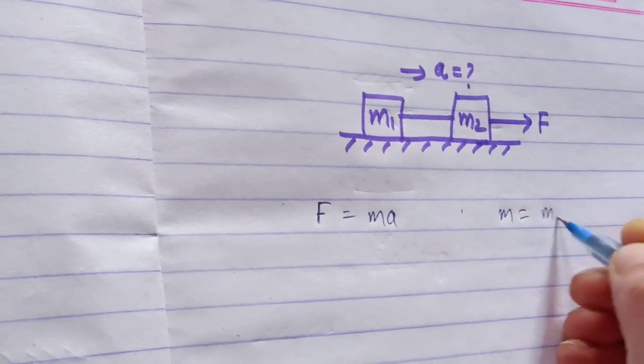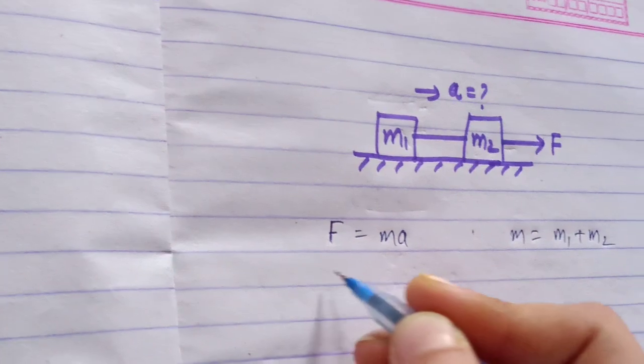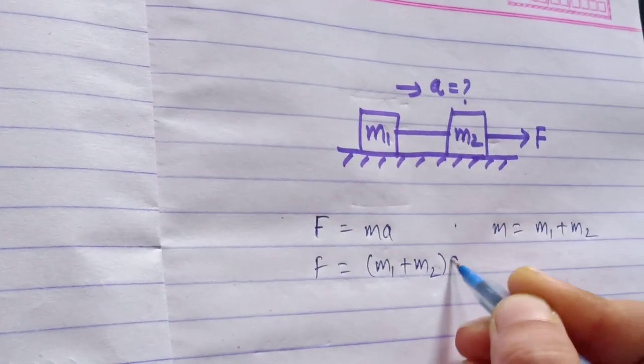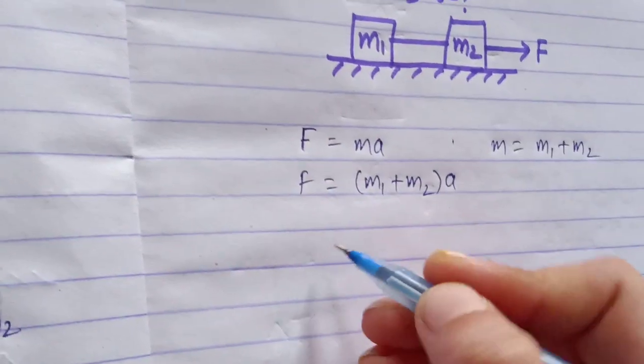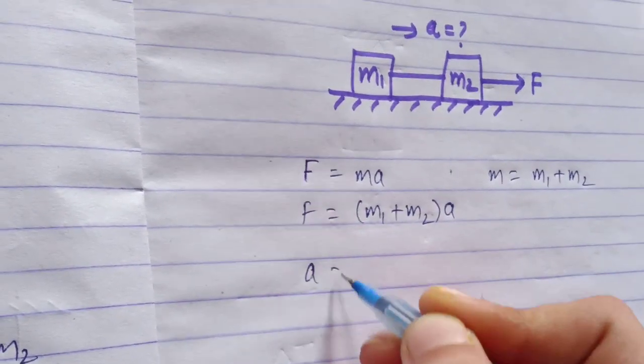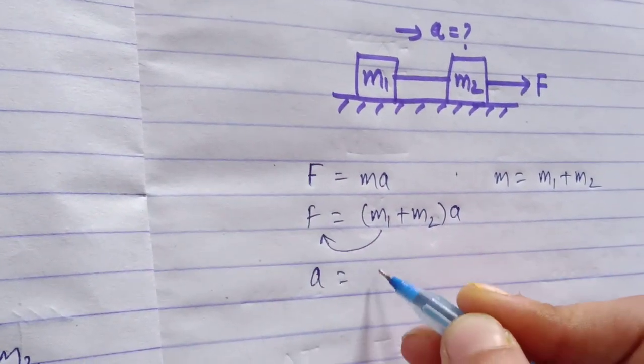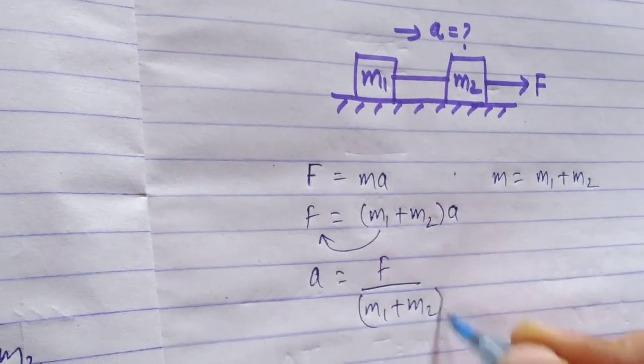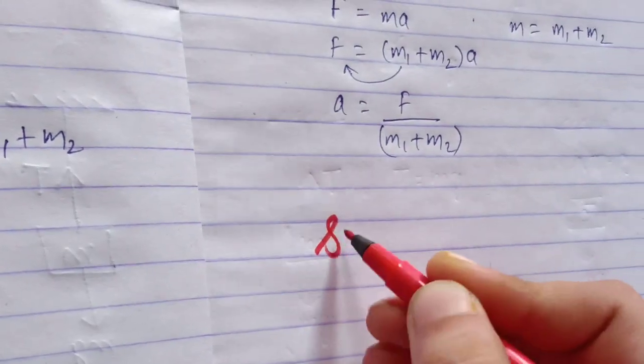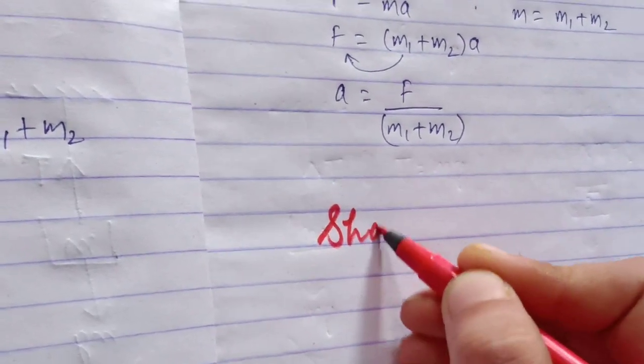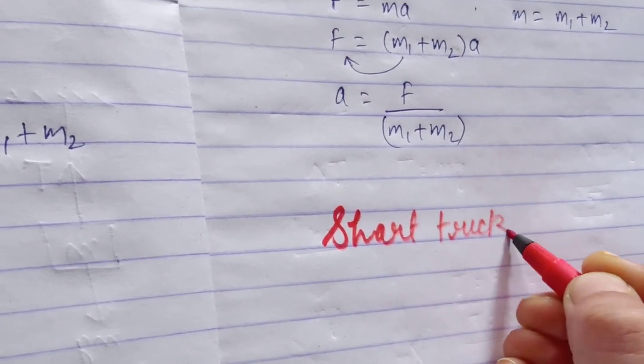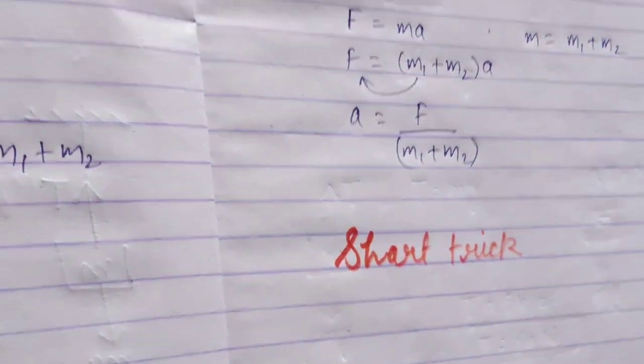M equals m1 plus m2. Then F equals (m1 plus m2) times a, so a equals F divided by (m1 plus m2). But I'll tell you the short trick for this.